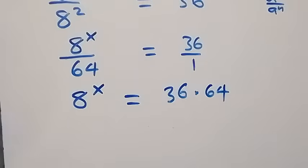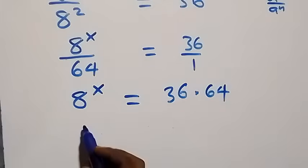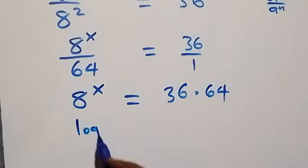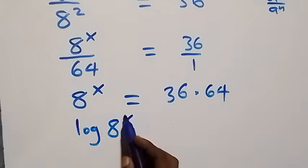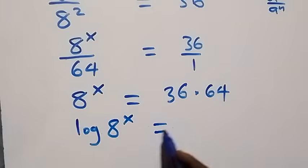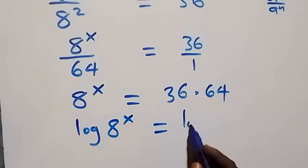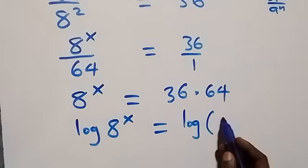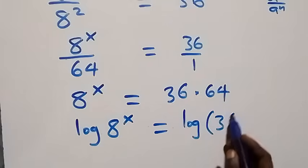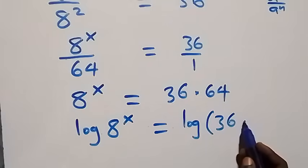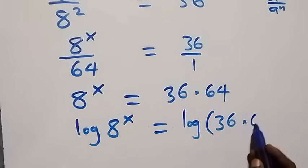Now with what we have, we can take the log on both sides and we have log 8 raised to power x equals log of 36 times 64.